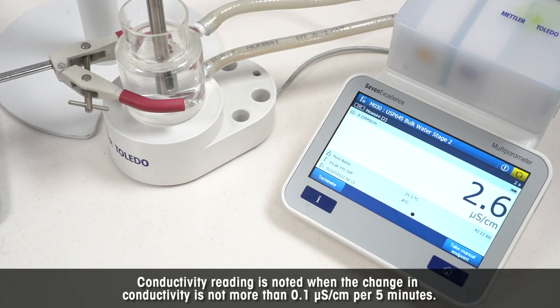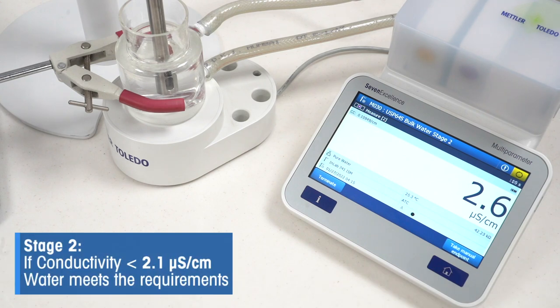Note down the conductivity when the change in conductivity is not more than 0.1 microsiemens per centimeter per five minutes. Hence, continuous monitoring of the sample reading is required. If the final conductivity value is less than 2.1 microsiemens per centimeter, the water meets the requirements as per stage two. Here, the conductivity value exceeds 2.1 microsiemens per centimeter. So we need to proceed with stage three.